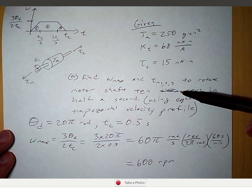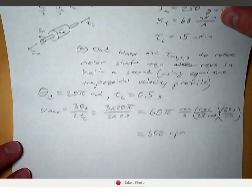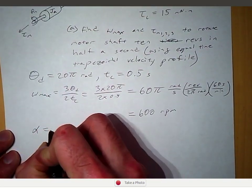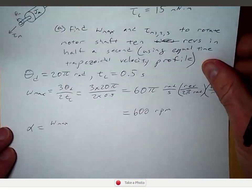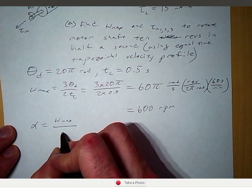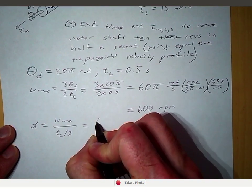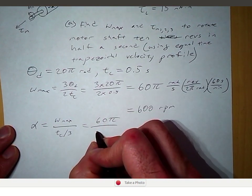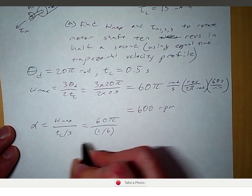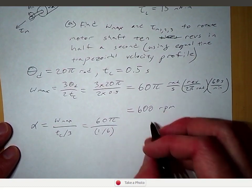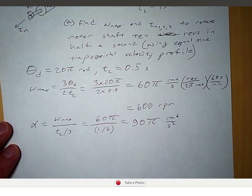To find the torque, we need the angular acceleration using Newton's second law. The acceleration is the change in velocity divided by the change in time. Going from zero up to omega_max over tc over 3: that is 60π divided by (0.5 divided by 3), or 60π divided by 1/6, giving us 90π radians per second squared.